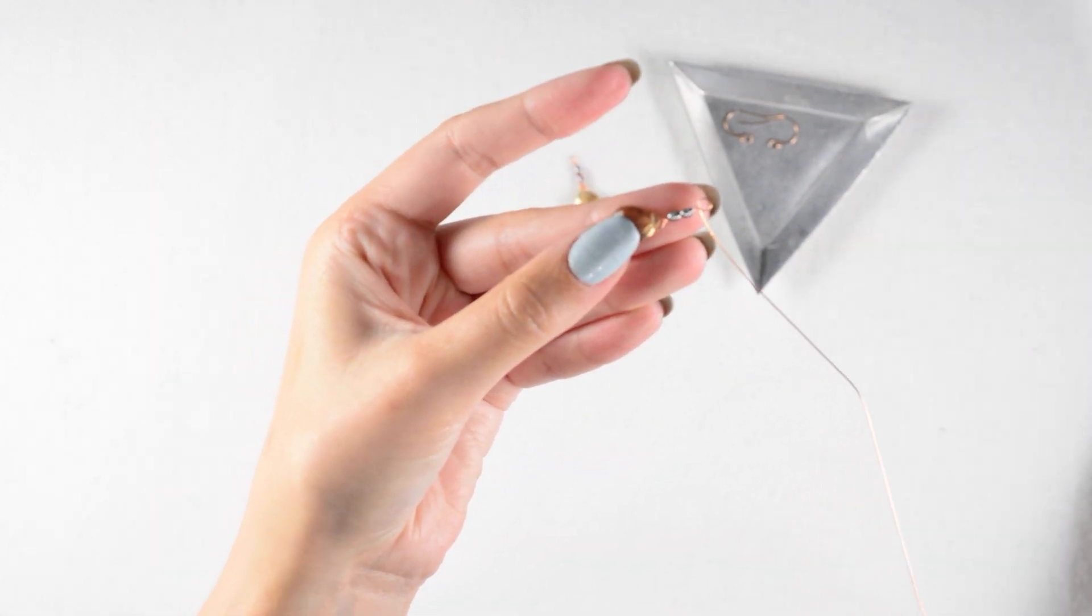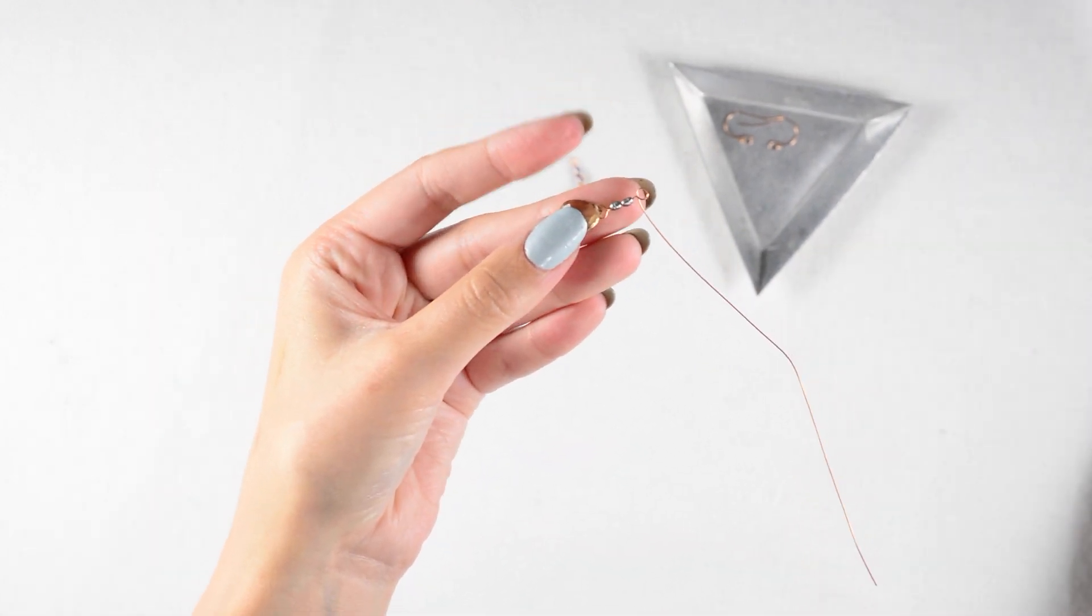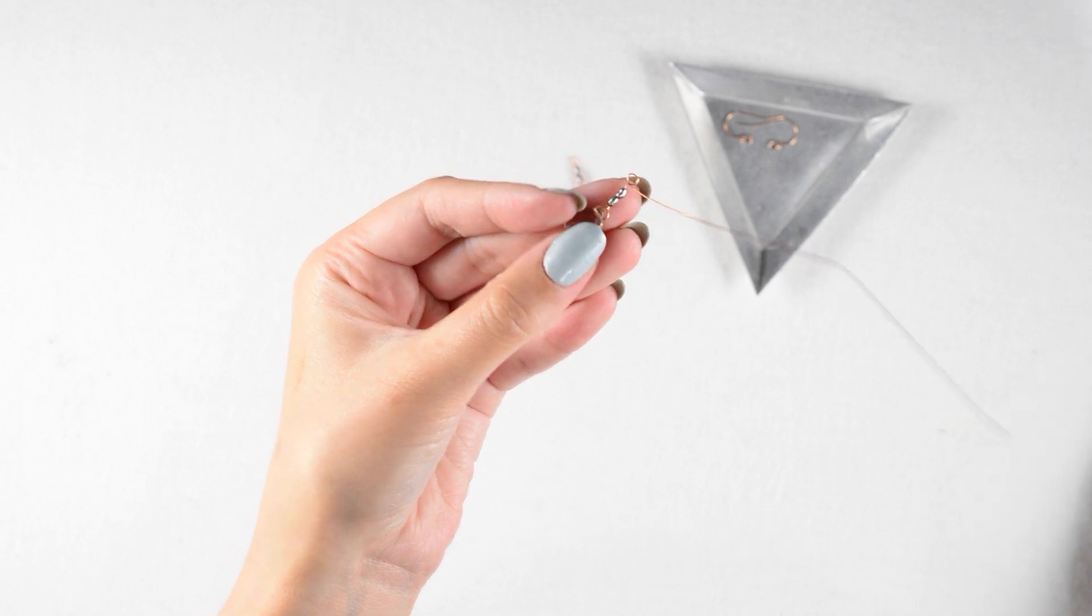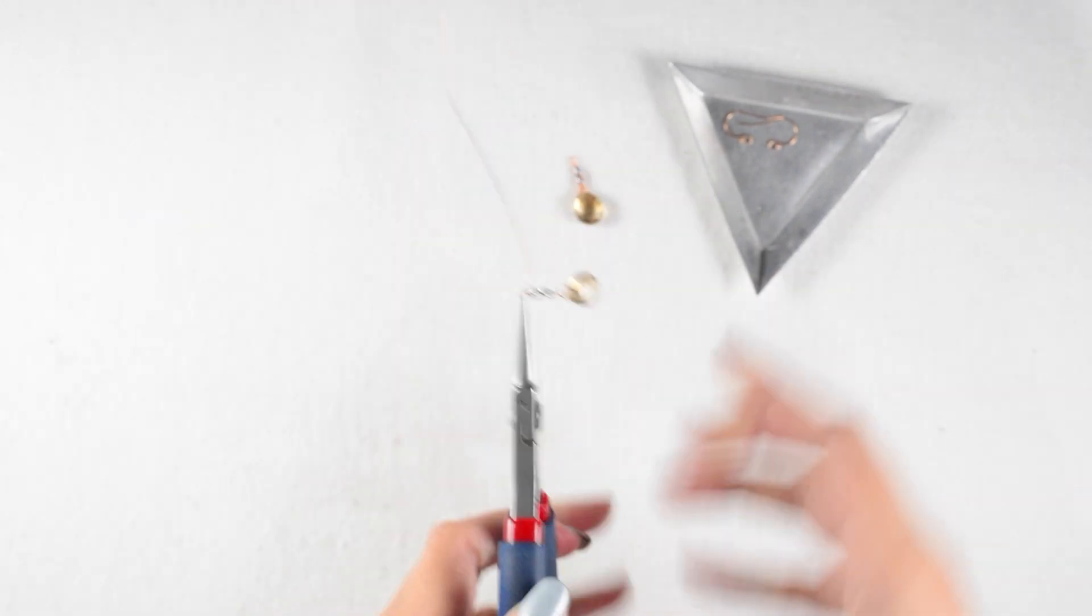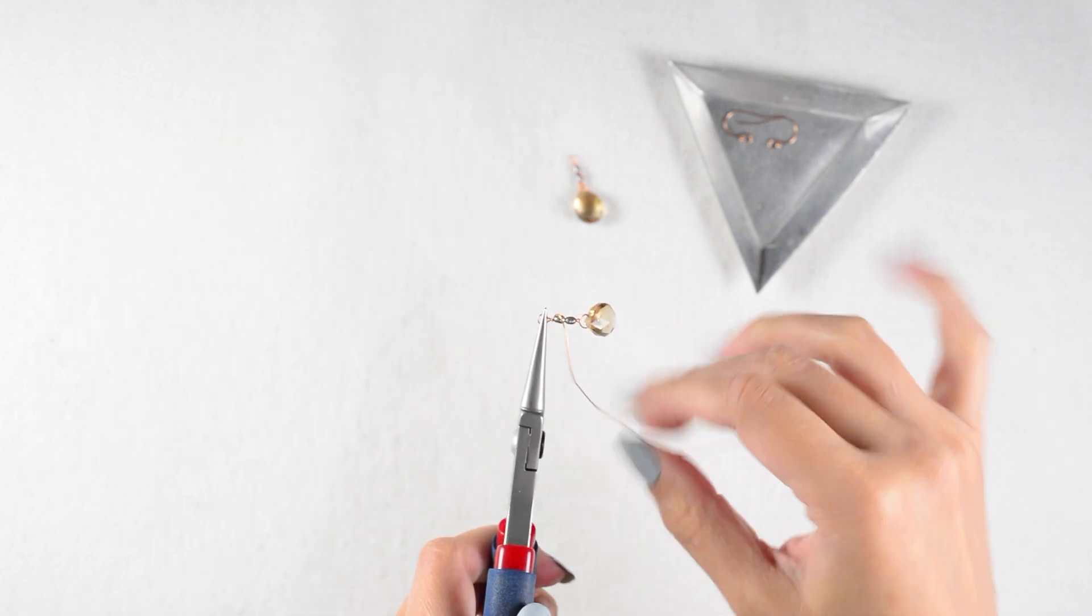When I'm making earrings with any sort of asymmetric aspect of the design, like this coil, I want those earrings to be mirroring each other rather than identical, because I like the way they frame the face.